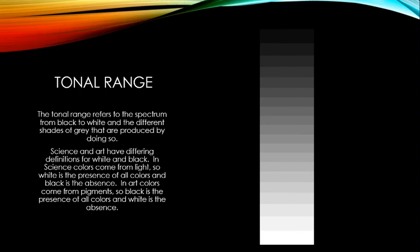We also have a tonal range, which refers to the spectrum from black to white and the different shades of gray produced in between. In science, white is the presence of all colors and black is the absence. In art, since colors come from pigments, black is the presence of all colors and white is the absence.